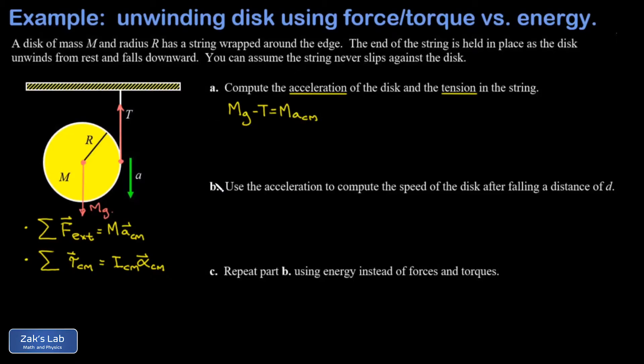For the torque equation, gravity exerts no torque with respect to the center of mass because for computing torque we locate the total gravitational force at the center of mass, which is the rotation axis — so that torque vanishes. The only torque is from the tension, acting through a lever arm of magnitude R, already at right angles to the radius. So the torque equation is simply T times R equals the moment of inertia with respect to the center of mass — one-half MR² for a disk — times alpha.